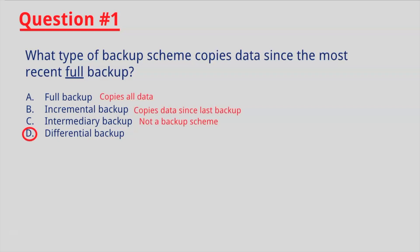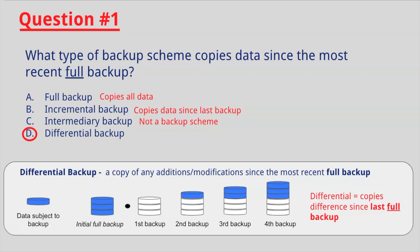A full backup copies all data regardless of the most recent backup. An incremental backup copies data since the last backup regardless of what that backup was, and an intermediary backup is not a backup scheme. Think about this graphic again — you can see that the differential backup copies the difference in data since the last full backup.